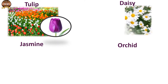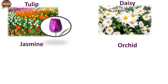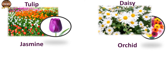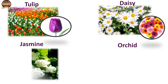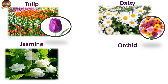Daisy. Daisy also comes in different shades or colors. Jasmine. Jasmine is a climber, or the plant grows on the land, and jasmine smells awesome.